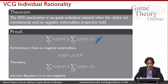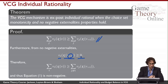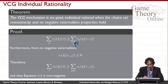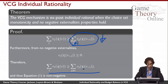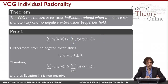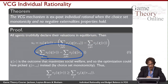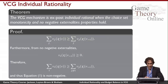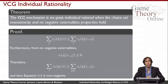Now I also use no negative externalities: the value agent i has for the choice made when he's not present is greater than or equal to zero. If I change the sum to exclude agent i, I've removed a non-negative number, so the expression got smaller but the inequality still holds. That's exactly what I wanted to prove — the agent's utility expression is positive or non-negative, and so we obtain individual rationality.